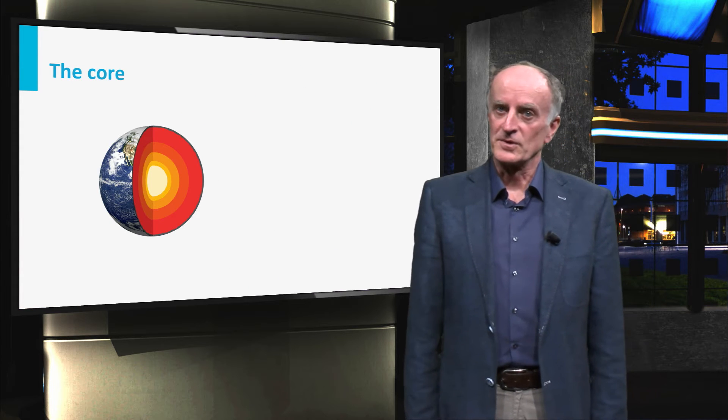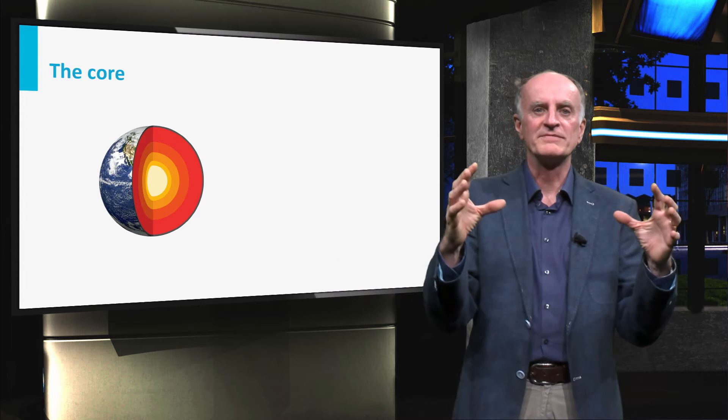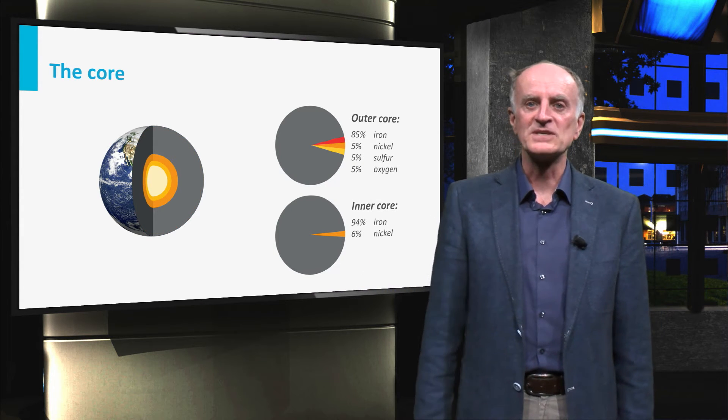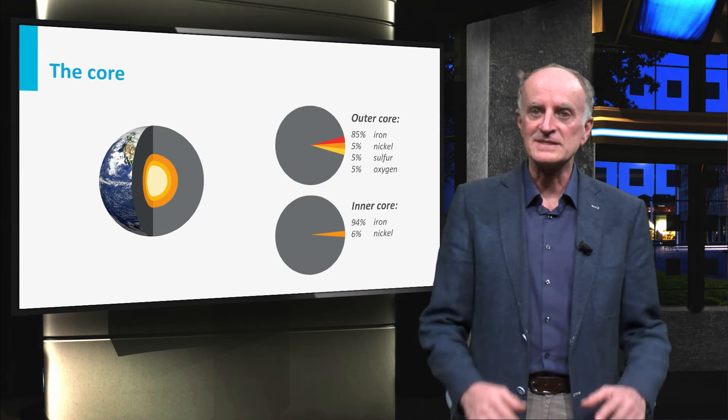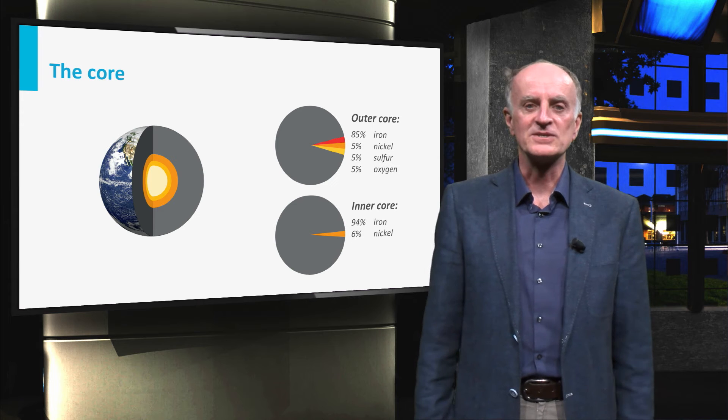The Earth core results from the primary segregation of the gases formed in the Earth 4.5 billion years ago. It is formed by minerals very rich in heavy elements such as iron and nickel. It still releases heat which forms a substantial part of the heat reaching the surface.